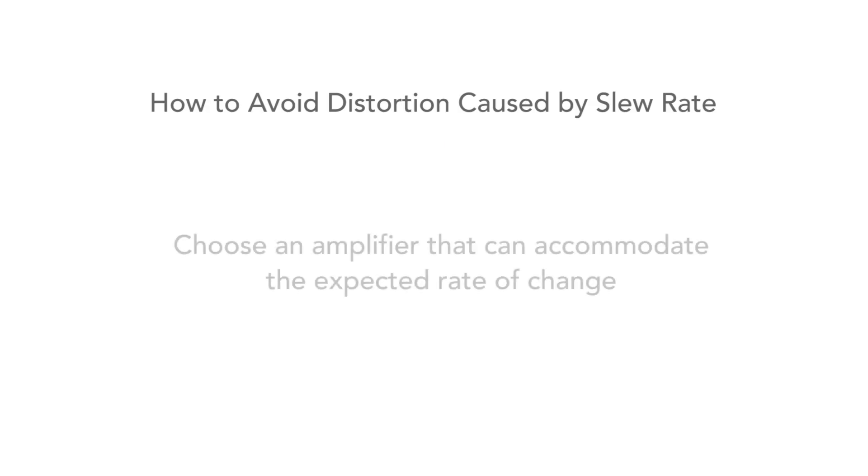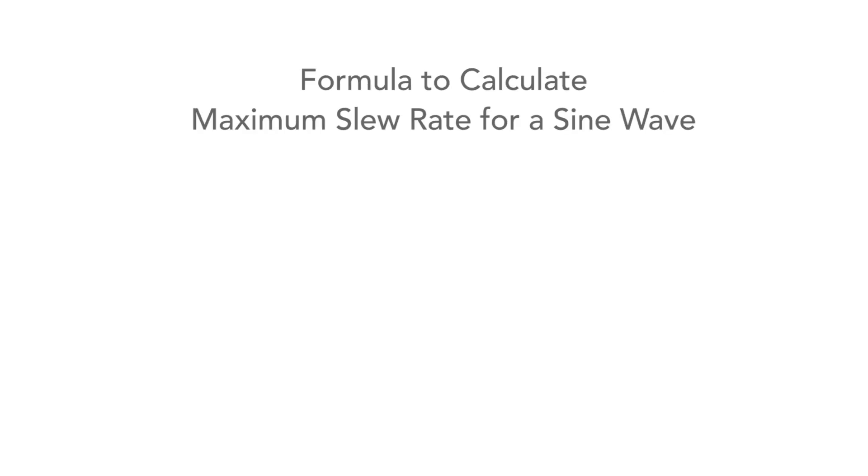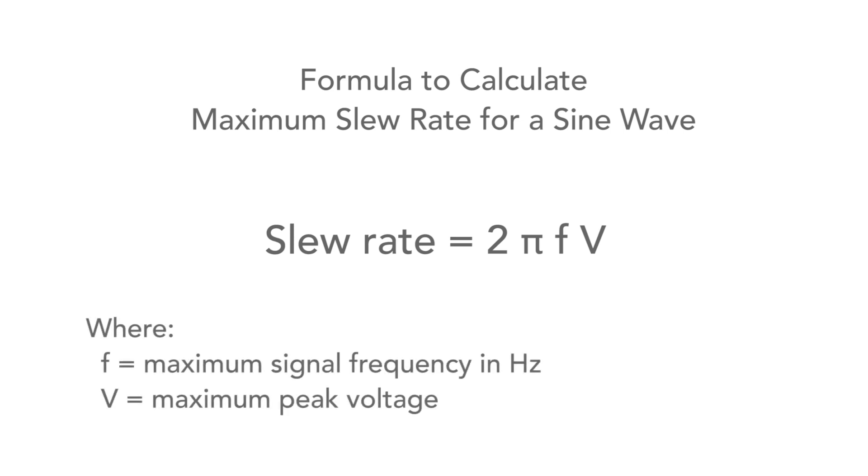So how can we avoid this? We need to choose an op-amp or other amplifier that has a slew rate that can cope with the expected rate of change. Fortunately, there's a simple formula that can be used to calculate this.